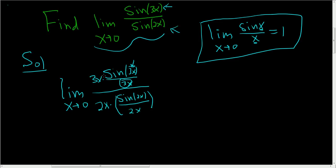At this point, the x's cancel. So we get 3/2 times the limit as x approaches 0 of sin(3x)/(3x) divided by sin(2x)/(2x).